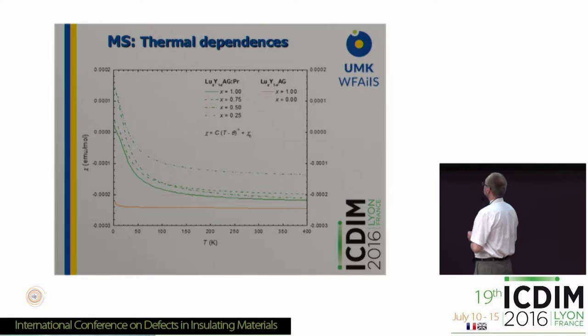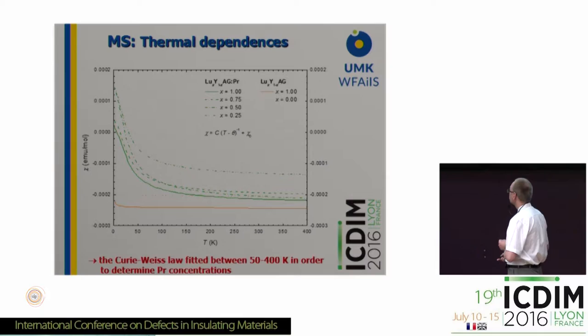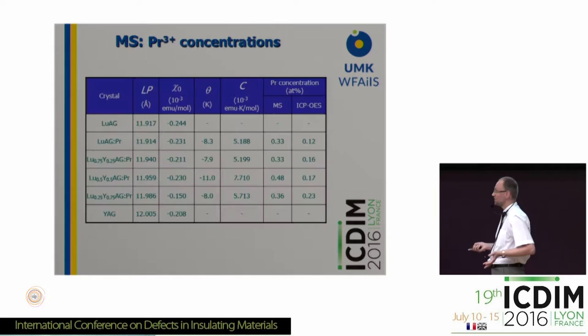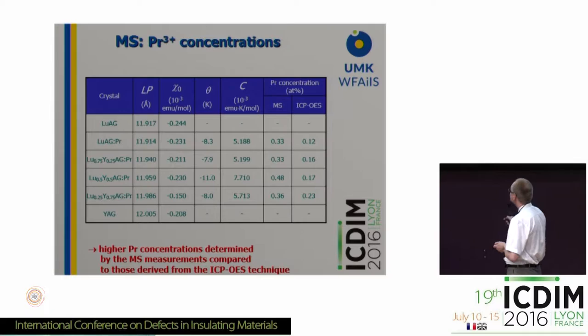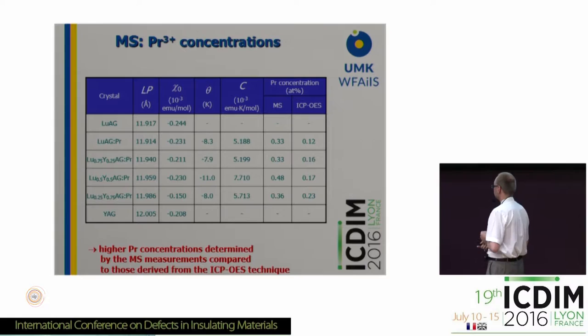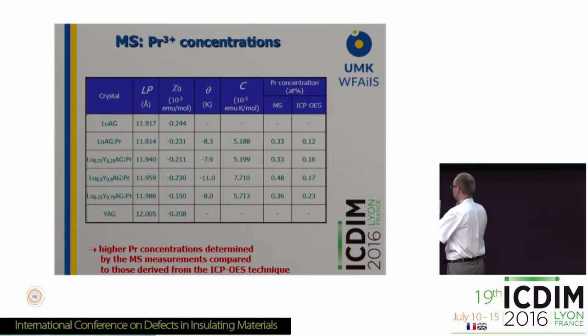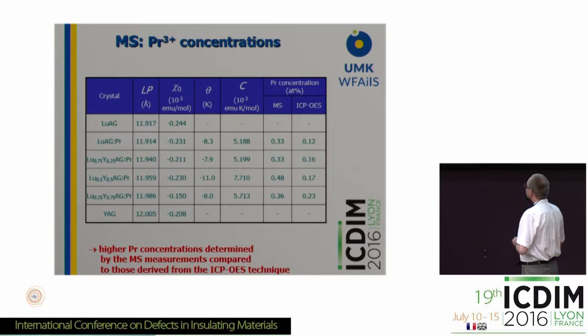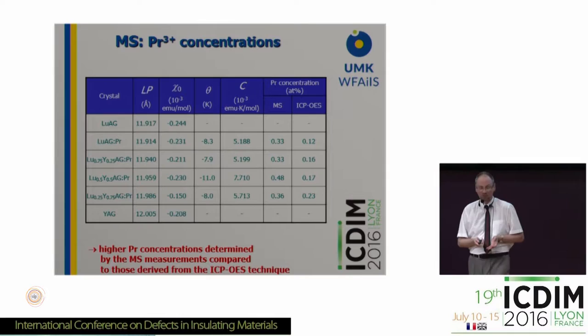Here are the values of magnetic susceptibility studied as a function of temperature. We can fit the Curie-Weiss law to determine the concentration of Praseodymium in the crystal. There is a surprise: the values derived from the magnetic measurements are higher than the values derived from ICP-OES methods. This is strange and we don't know how to explain it, so this deserves further investigation. The worst thing is that there is no correlation, because with ICP methods we get the highest Praseodymium concentration in one crystal, and with magnetic susceptibility in a different crystal. So this is still a mystery and we are thinking about how to solve it.